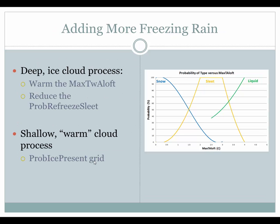Let's start with adding more freezing rain. There are two ways in the probability of weather type that you can add more freezing rain. First, you can warm the maximum warm layer wet bulb temperature aloft — referring back to the diagram on the right, the more you warm it, the more you're getting towards an all-liquid solution aloft. You can also cool it and get more toward the snow probability. The maximum wet bulb temperature aloft is important in our calculations: from about 1 to 3.5 degrees Celsius we see sleet introduction, colder than those temperatures snow. If you want to add more freezing rain, you push the temperatures to where your liquid curve is really starting to increase.